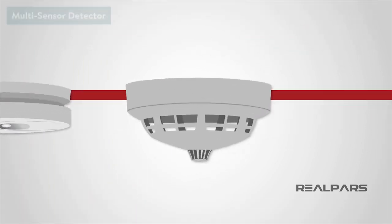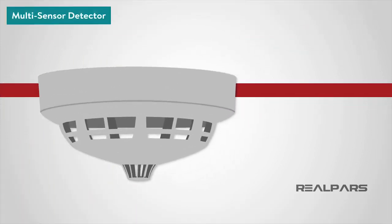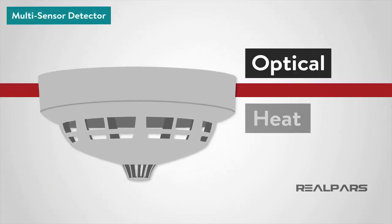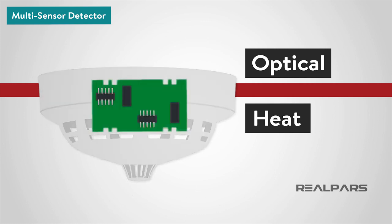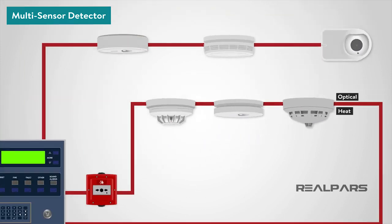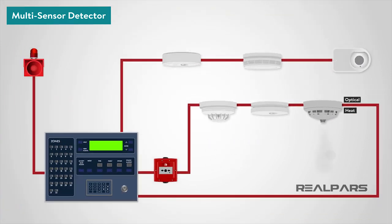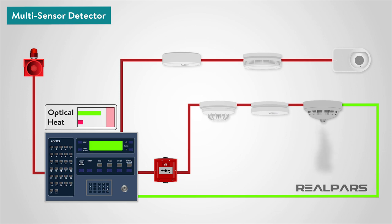Carbon monoxide detectors have an electrochemical cell, which senses carbon monoxide but not smoke or any other combustion products. The multi-sensor detectors combine inputs from both optical and heat sensors and process them using a sophisticated algorithm built into the detector circuitry. When polled by the control panel, the detector returns a value based on the combined responses from both the optical and heat sensors. They are designed to be sensitive to a wide range of fires.